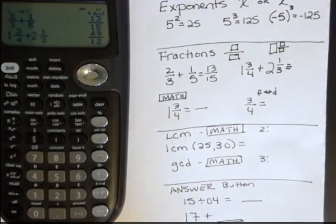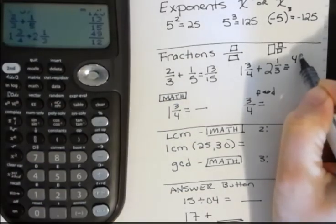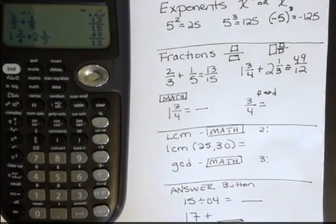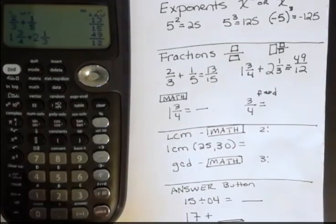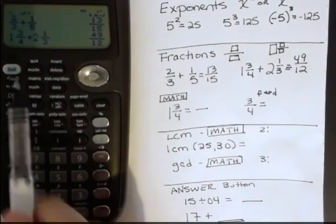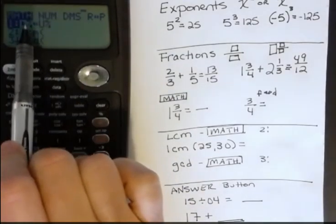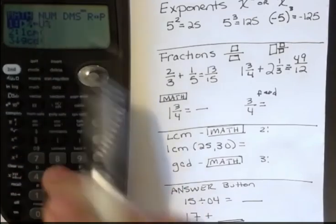And that is 49 twelfths. If you want to know what 49 twelfths is as a mixed number, you can go to math, the math button. And you see the number one says change from, it shows you an improper fraction and a mixed, hit enter.